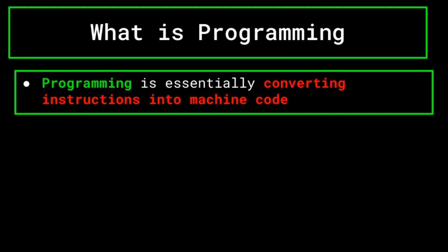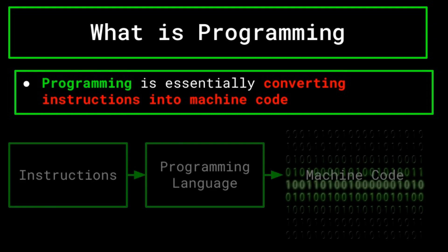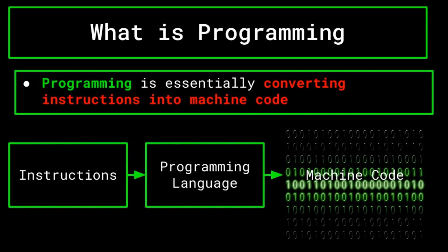This is where programming languages come into play. Think of programming languages as a midpoint of sorts — they're not quite English, but they're generally far from machine code. They help bridge the gap between what we can understand and what the computer can understand, similar to how a translator would allow you to speak to your friend. You write instructions in a programming language, and the instructions are then converted into machine code, which the computer interprets and carries out.